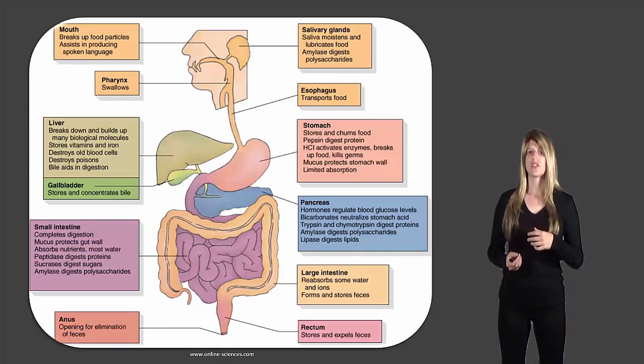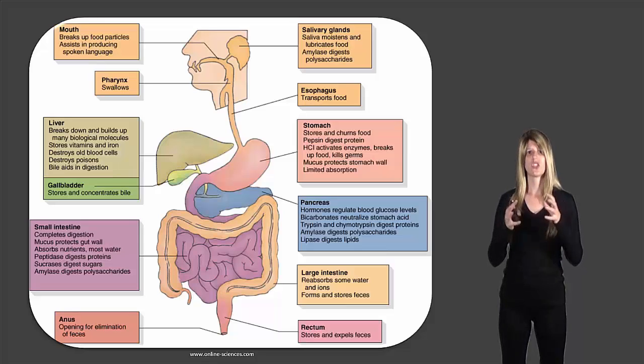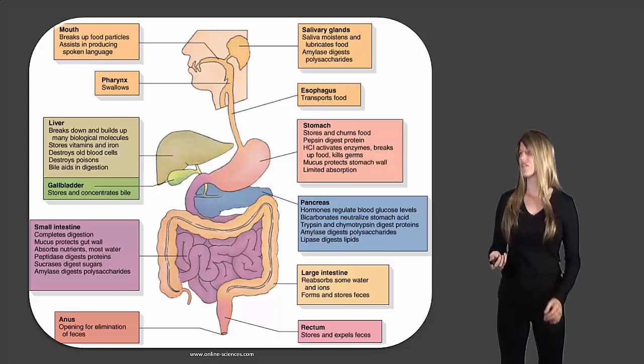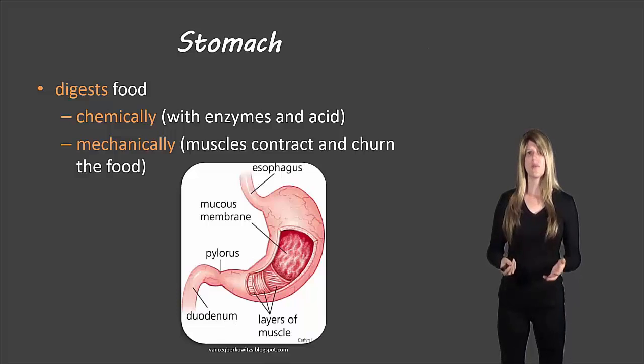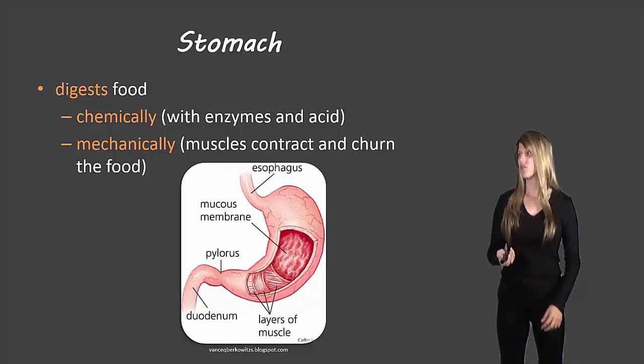So after it moves from your esophagus, it goes into your stomach, and inside of your stomach there are all sorts of enzymes as well as really really acidic conditions that help break down the food. In addition to that, your stomach churns the food, so the stomach is a very muscular organ and it helps squish the food around which helps break it up into pieces. So the stomach is involved in digestion and it does that two ways: chemically with enzymes and acid, and mechanically with the muscles that churn the food.